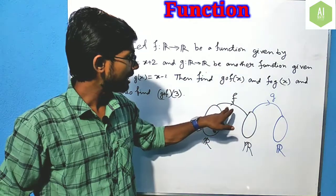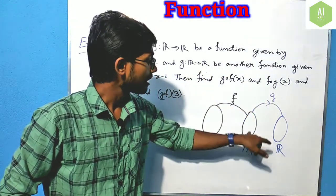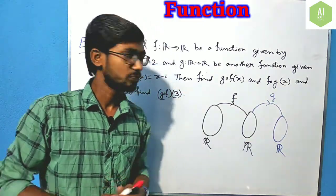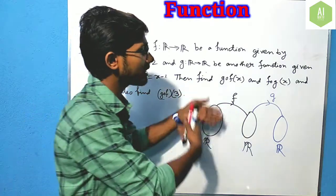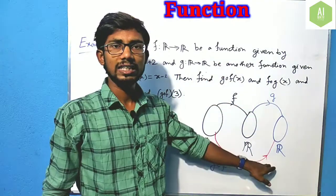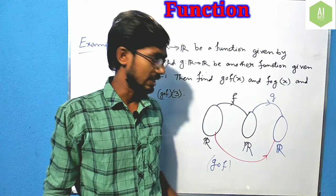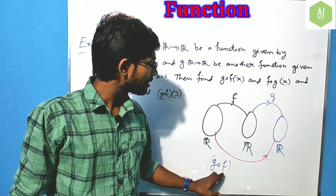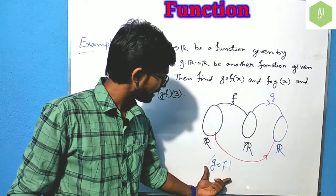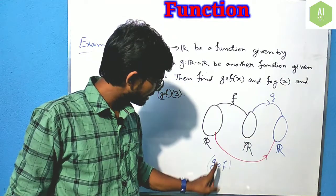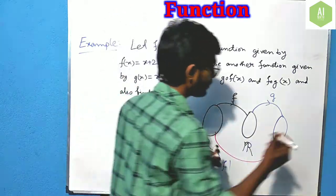Look at the direction: first f goes from R to R, then g goes from R to R. So when we write the composition, we change the direction — the combined function goes directly from the first R to the last R. This function will be g compose f. Note that f was applied first, but when we write the composition, we write g first, then f.